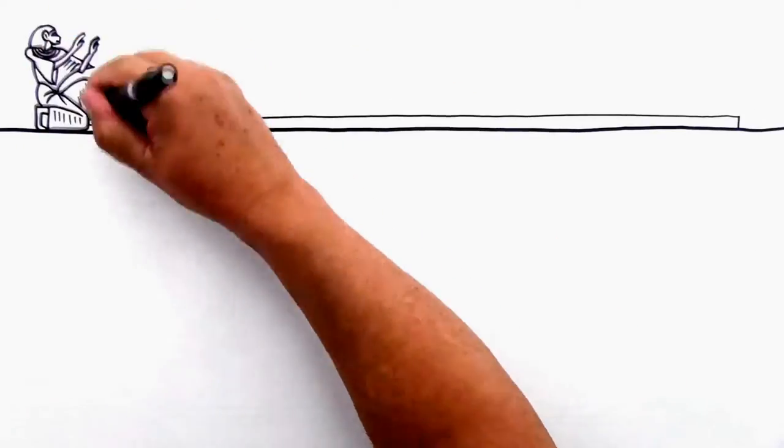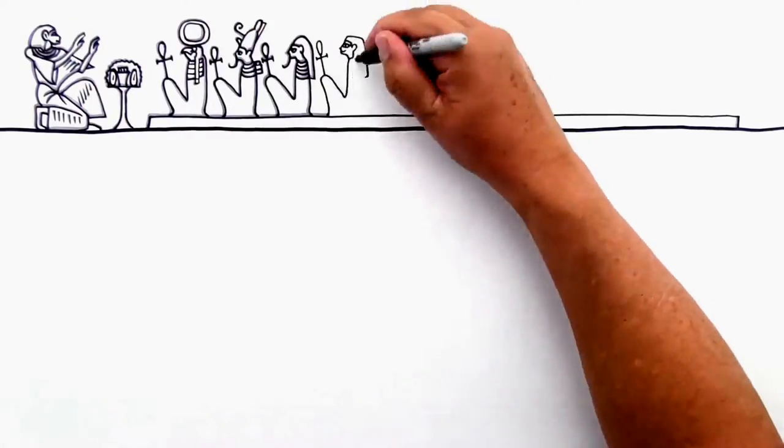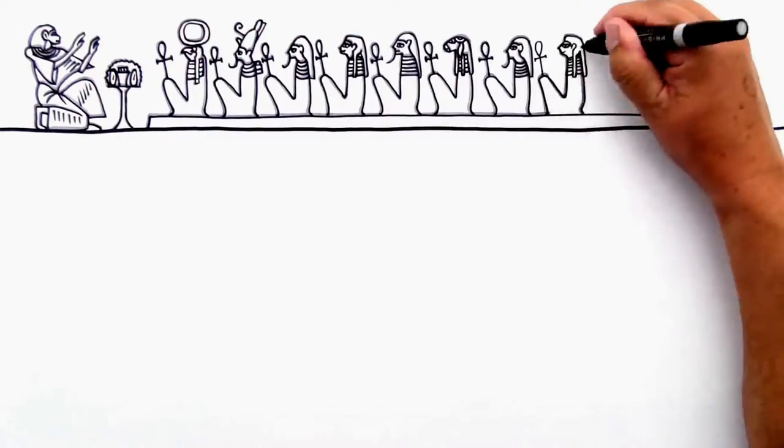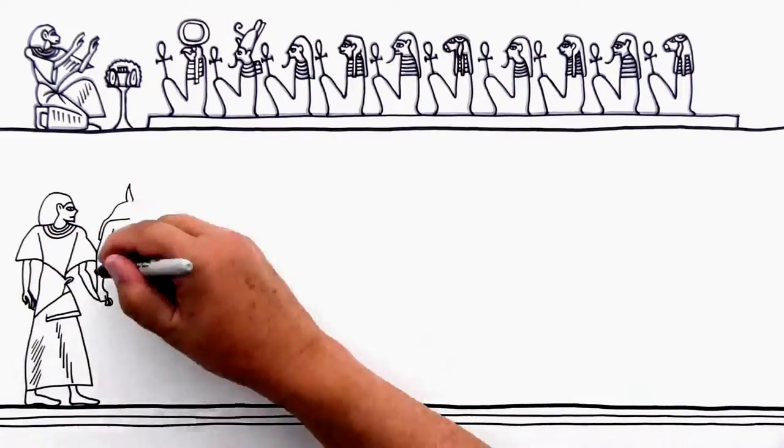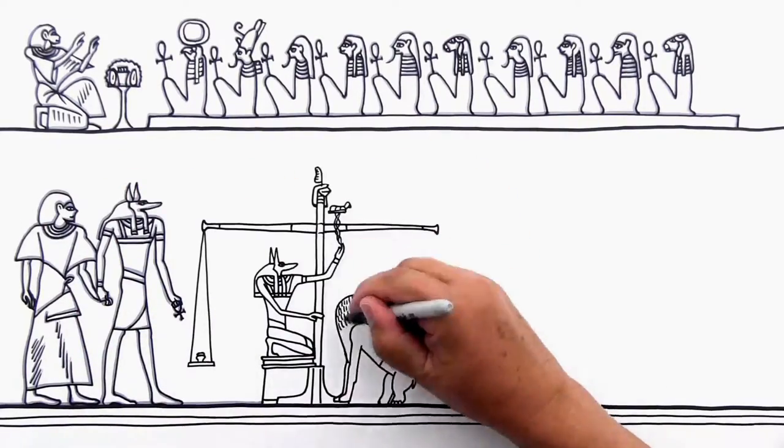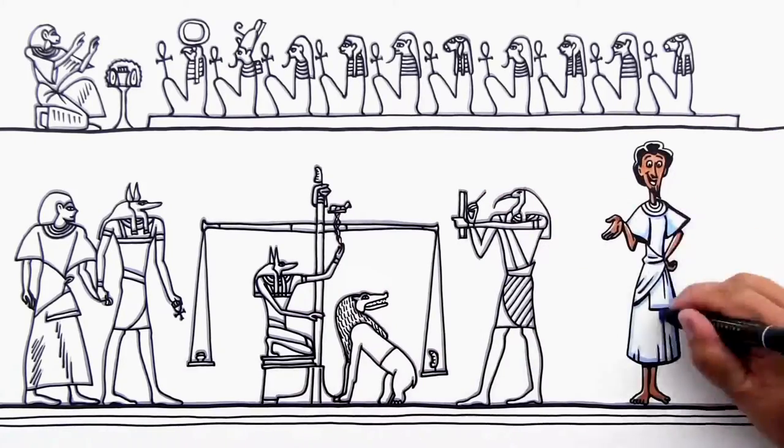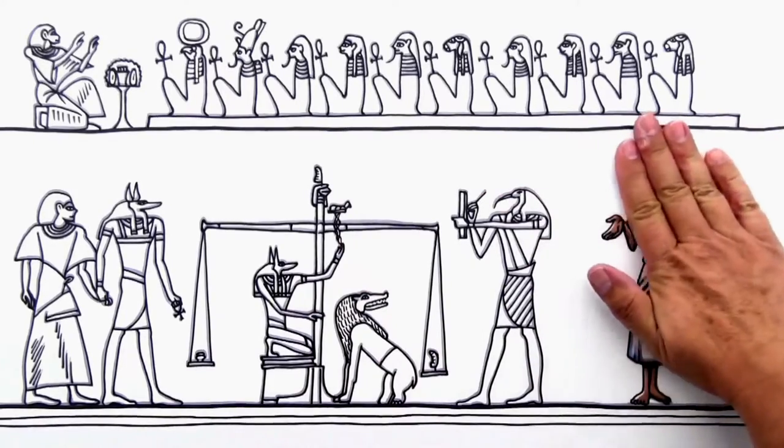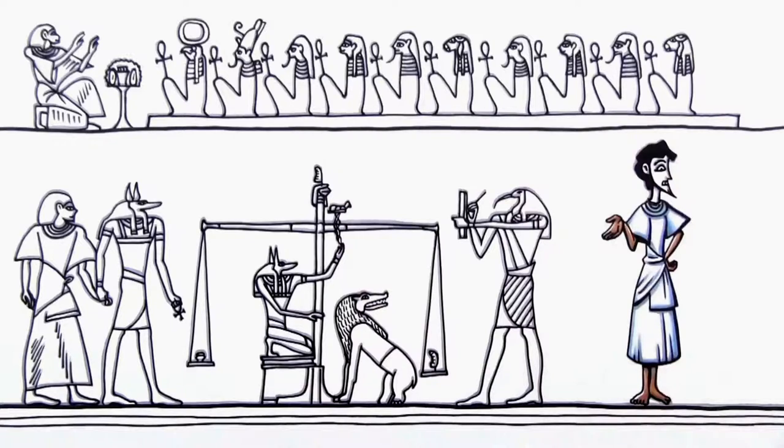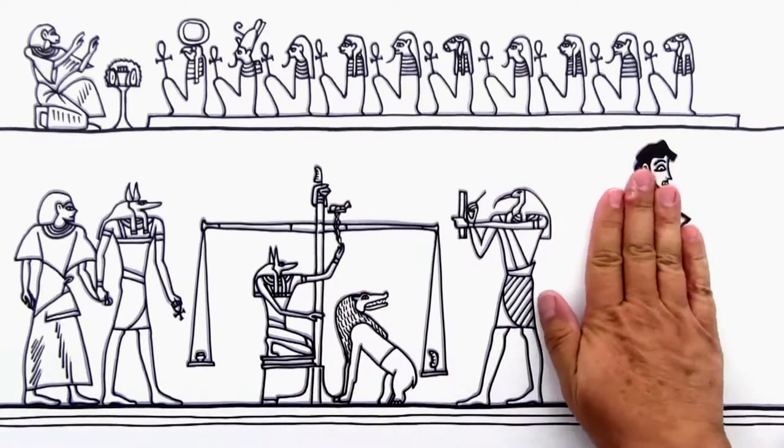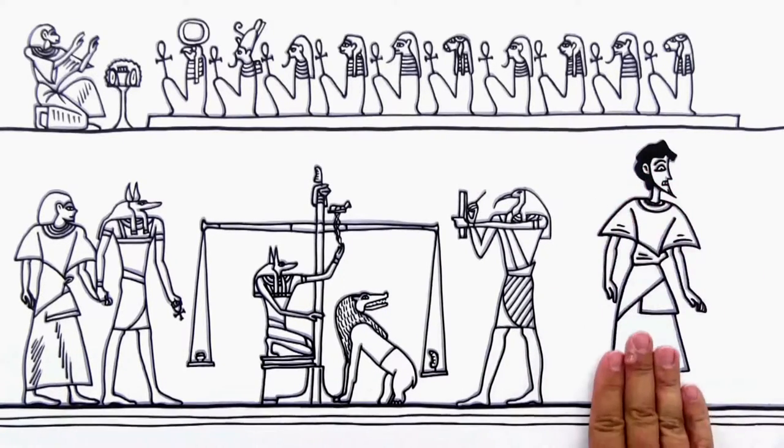Egyptians obsessed over death and the afterlife. Paintings on the walls of tombs often showed the ba, or soul, on its journey through the afterlife. When an Egyptian artist painted a figure, every body part was shown from its most recognizable angle. The face was shown in profile, except for the eye, which was shown head-on. The body was shown head-on, and the legs and feet were twisted back into profile. Don't try this at home.